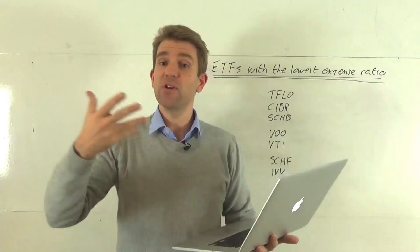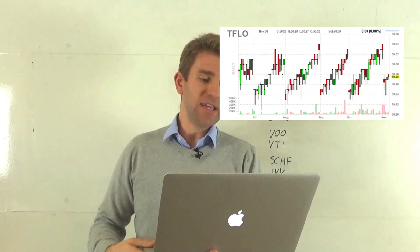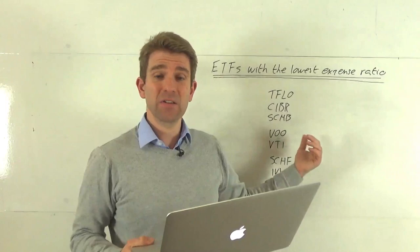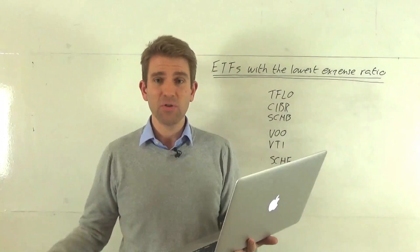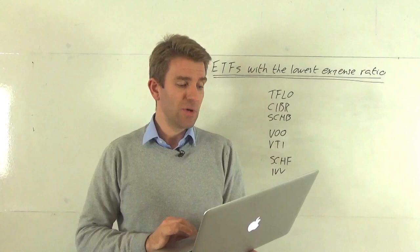The first one is TFLO, which is the Treasury Floating Rate Bond. This basically tracks the performance of the U.S. Treasury Floating Rate Index, which is composed of U.S. Treasury Floating Rate Bonds. Assets under management for this are $300 million, and the average volume over a three-month period is 82,000 shares. Not massive, dividend yield 1.5%. Important metric here is the expense ratio is 0.15%. When I'm doing this video, we've got a year-to-date performance of about 2%. In reality, you're not going to get massive returns from this one.